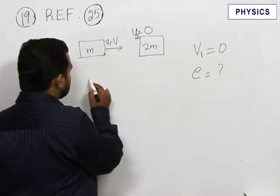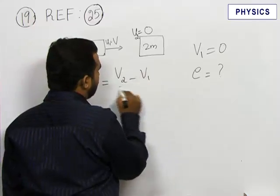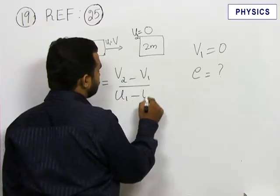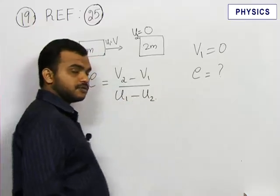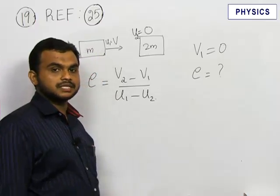The coefficient of restitution is given by the formula E equals v2 minus v1 by u1 minus u2. This coefficient of restitution is related to collision of two bodies which is an elastic collision.